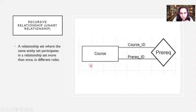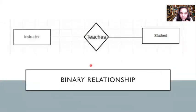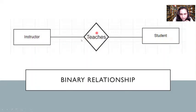You can also have a binary relationship, as shown here between the instructor entity set and the student entity set, with the relationship named 'teaches'. Because two entity sets are involved, this is a binary relationship. In table form, there would be an instructor table, a student table, and a teachers table showing the connection between instructor one and student one, instructor one and student two, and so on.